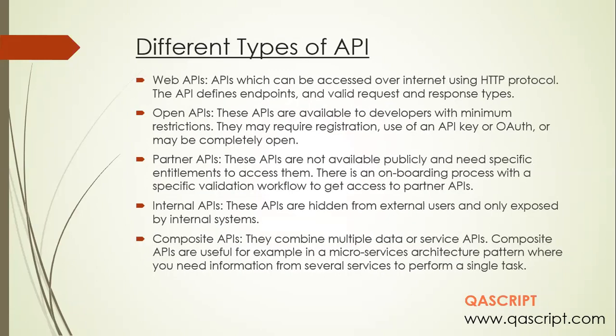Now, coming to different types of API — the most popular one is the Web API, also called the Web Services API. These APIs can be accessed over the internet using the HTTP protocol. They define endpoints and have valid request and response types, and mostly use either XML or JSON files to transmit information between the server and the client.